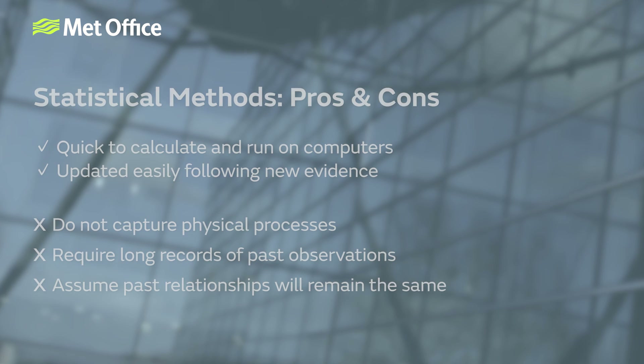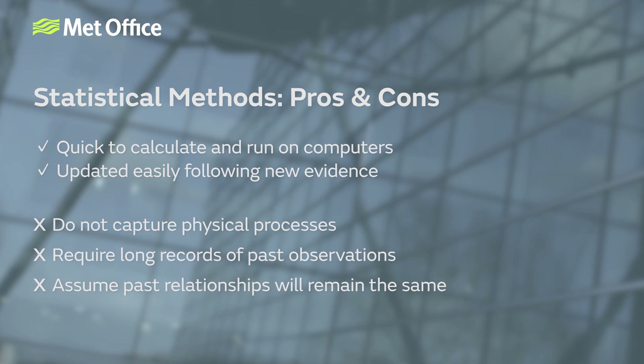One of the main advantages of using statistical methods is that, unlike dynamical methods, they're relatively quick to calculate and don't require too much computing power. The main disadvantage is that they only use statistical relationships, so they don't benefit from our knowledge of the many physical processes within the climate system. They also require long records of past observations and they assume that the relationship seen in the past will continue into the future, which might not be true in a changing climate.